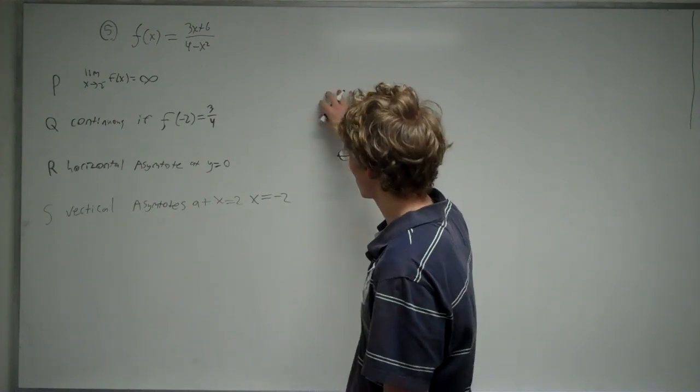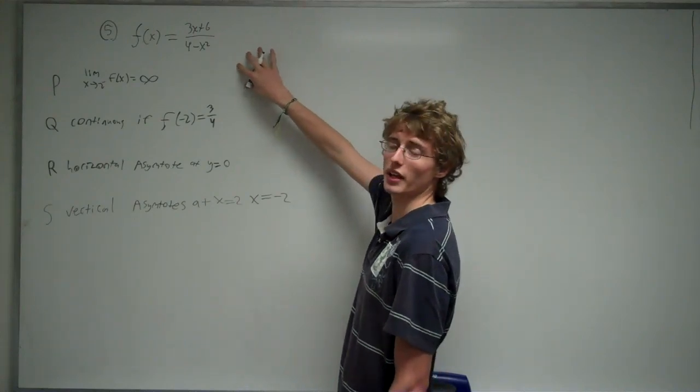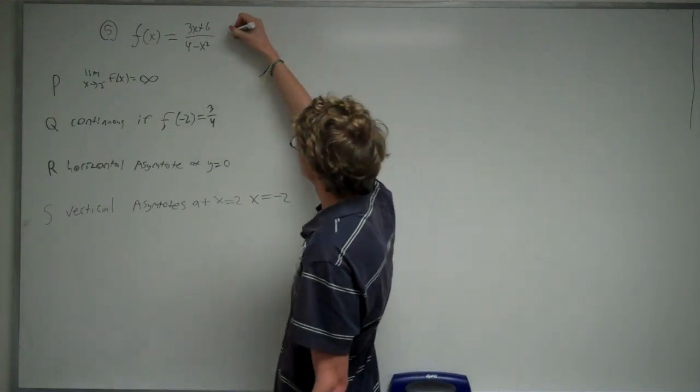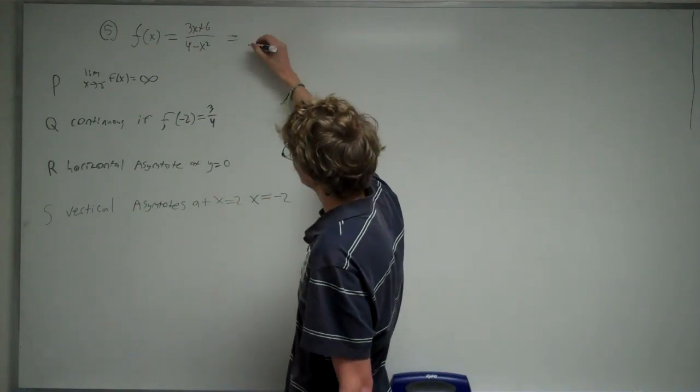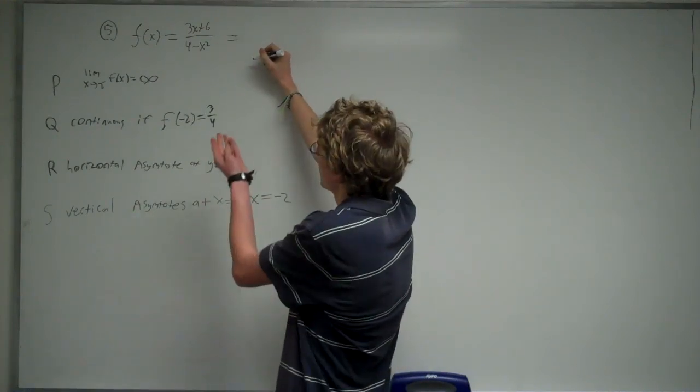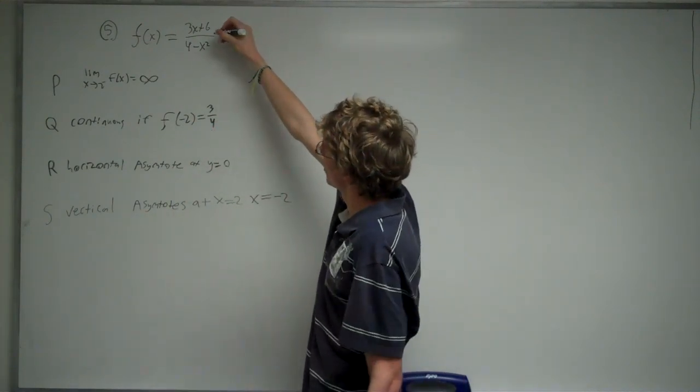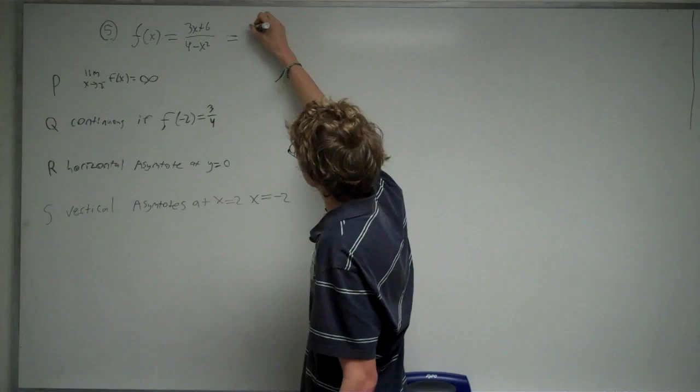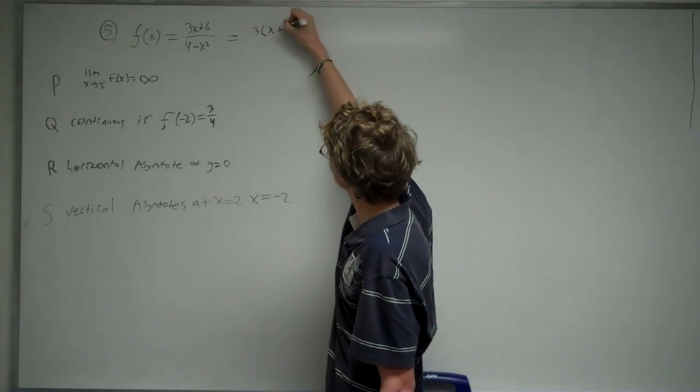The first thing you want to do is take this function and try to simplify it as much as possible. To simplify this function, you can factor things out of both the top and the bottom. From the top here, you can factor out 3, and that would give you 3 times (x+2).